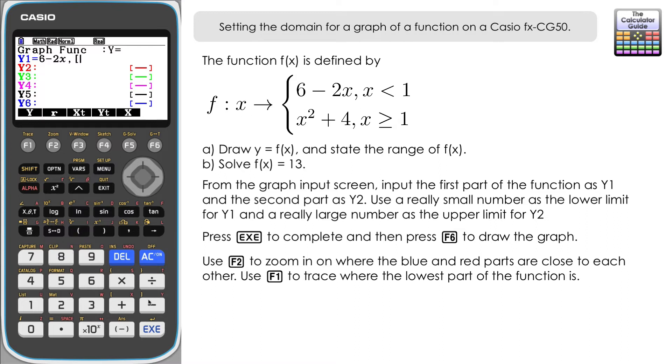And then comma and our upper limit for this first piece of the function is 1. And then let's close square brackets. And then as y2 I'm going to put the lower part of the function in which is x squared plus 4.